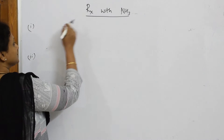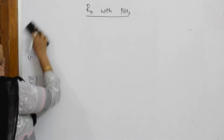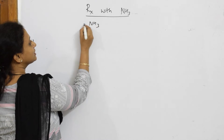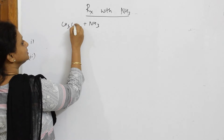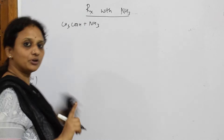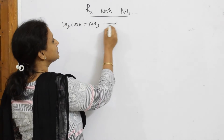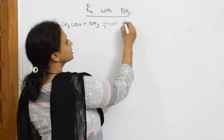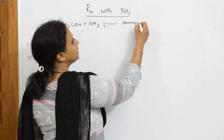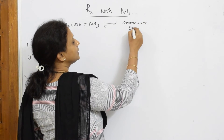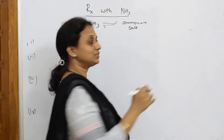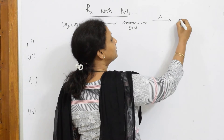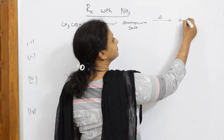Whenever you study the reaction of ammonia with a carboxylic acid (RCOOH), the first important thing to remember is that ammonia undergoes a reversible reaction with the acid and forms an ammonium salt. When you further heat that ammonium salt, it is going to form a compound called an amide.